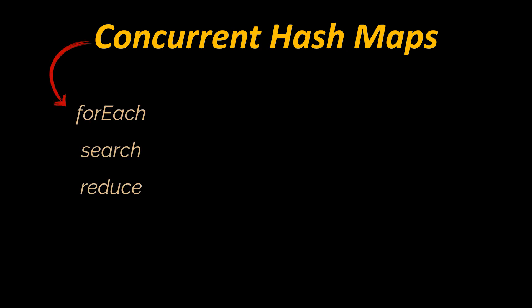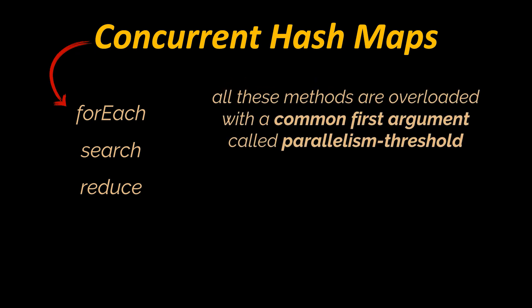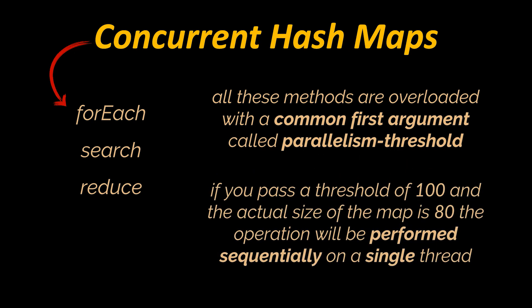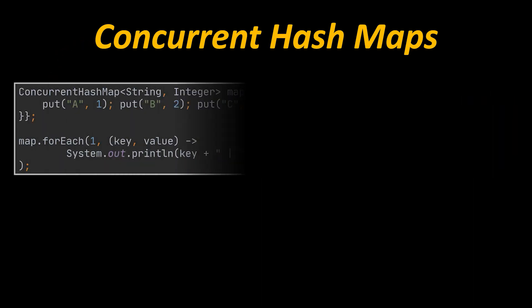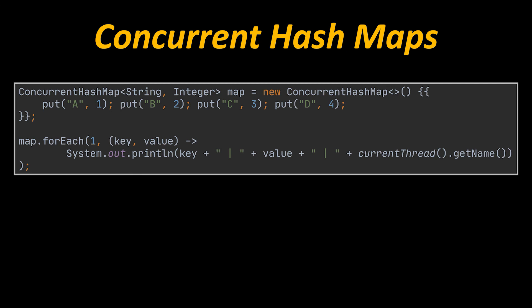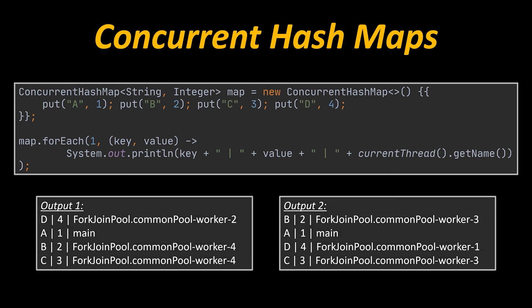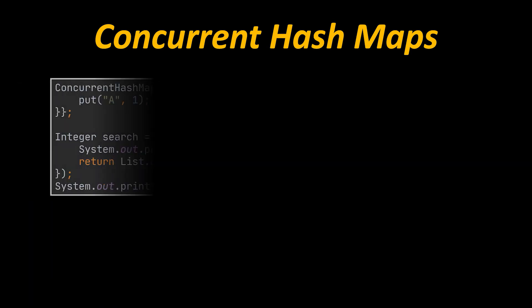The most important implementation, ConcurrentHashMap, has been further enhanced with methods to perform parallel operations: forEach, search, and reduce. These methods are all overloaded with a common first argument called parallelism threshold, which indicates the minimum collection size at which the operation should be executed in parallel. If you pass a threshold of 100 and the actual map size is 80, the operation runs sequentially. In the examples we use a threshold of one to always force parallel execution. The forEach method calls a BiConsumer with the key and value at each iteration; by printing the current thread's name, we can see that the handling thread may differ with every run.